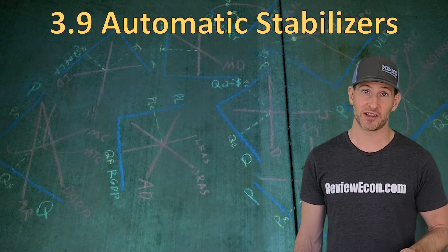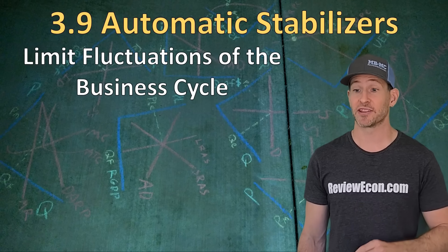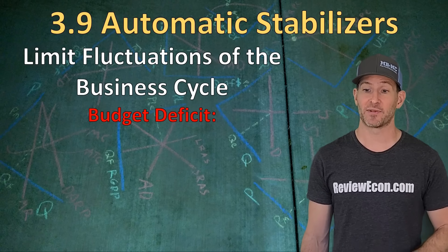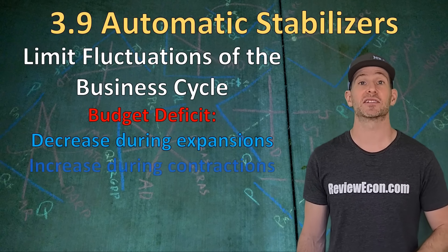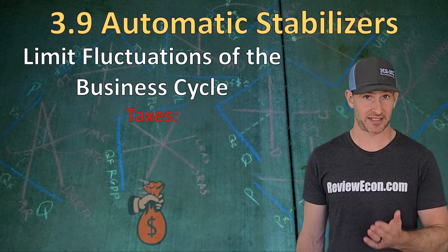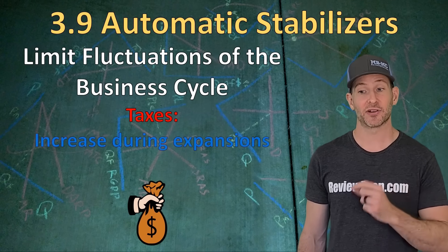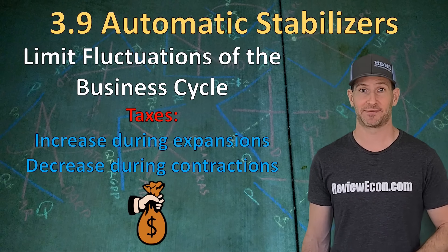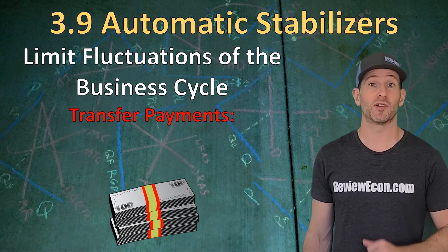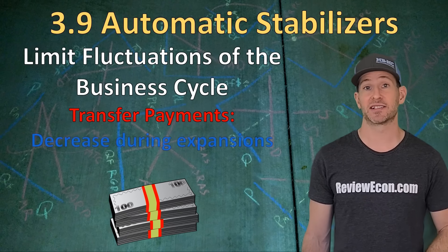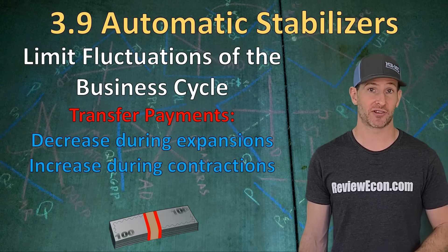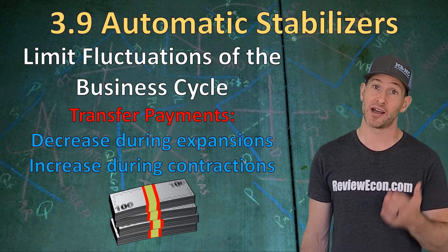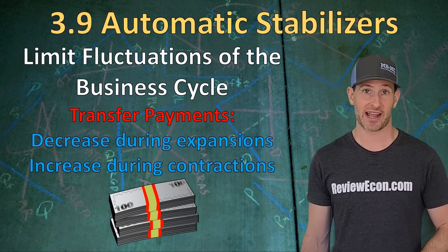Even without discretionary fiscal policy action by the president or Congress, automatic stabilizers will limit the fluctuations of the business cycle. An automatic stabilizer is anything that impacts the budget deficit when there is a change in the business cycle — they decrease the budget deficit during expansions and increase it during contractions. One automatic stabilizer is taxes: taxes increase during expansions because people earn more, and decrease during contractions because people earn less. Another is transfer payments, like unemployment compensation: unemployment compensation decreases during expansions because fewer people are unemployed, and increases during contractions. As a result, automatic stabilizers limit business cycle fluctuations, making recessions less deep and inflationary gaps less severe.